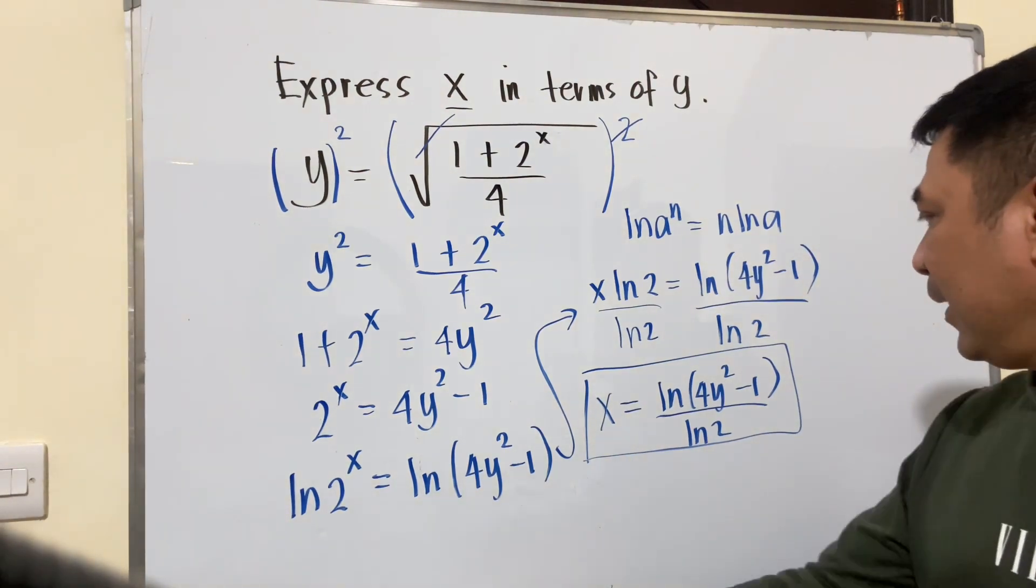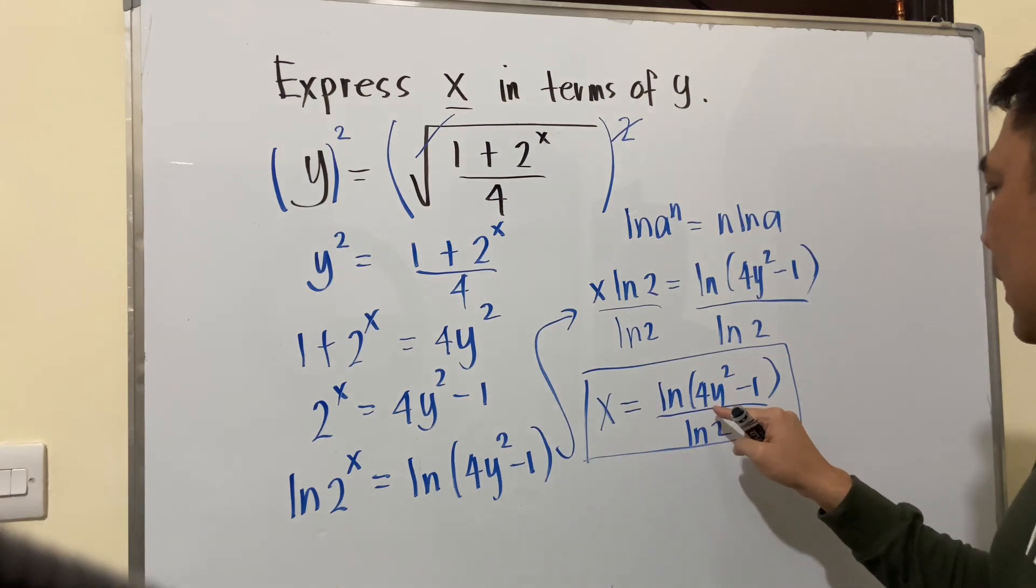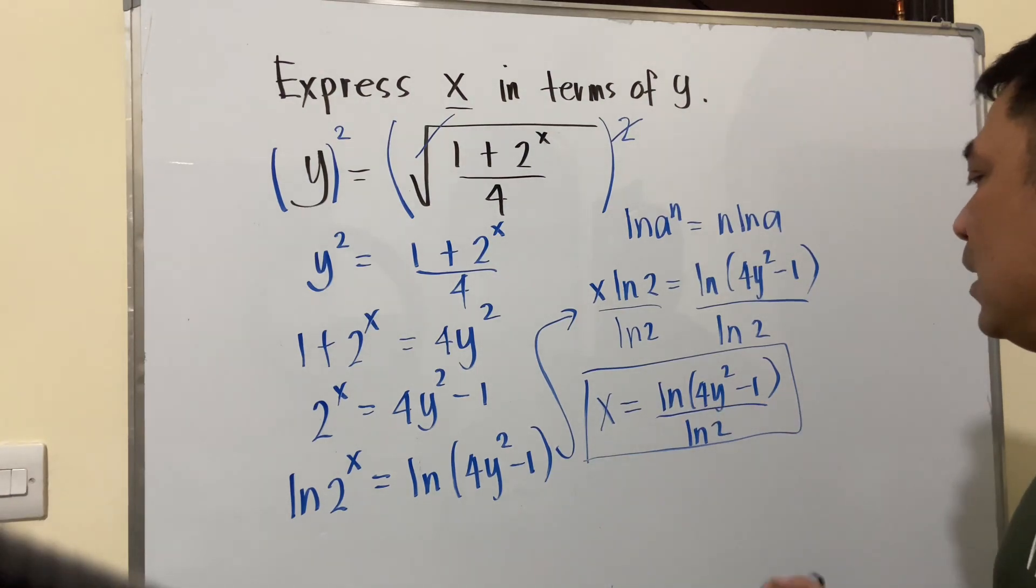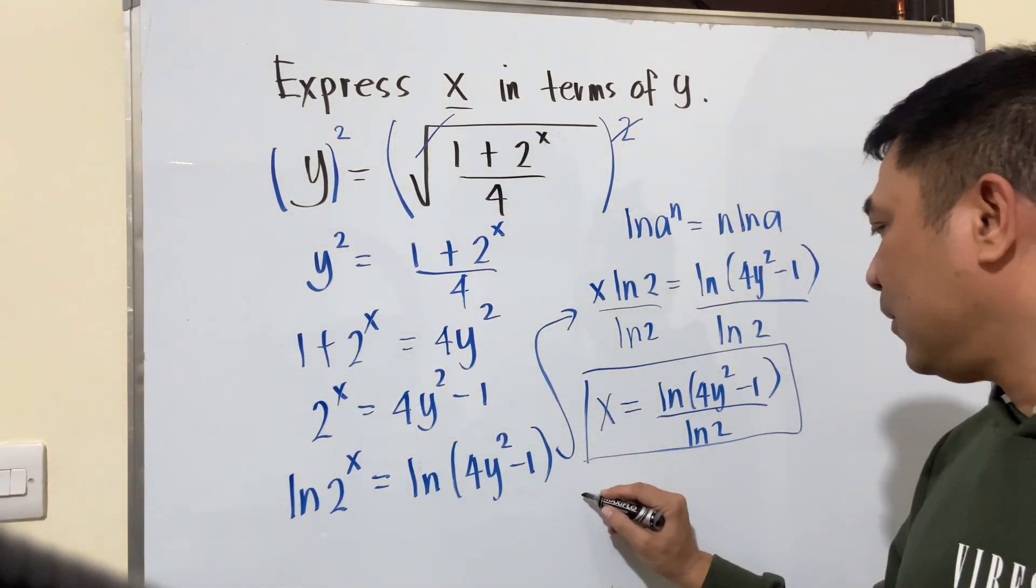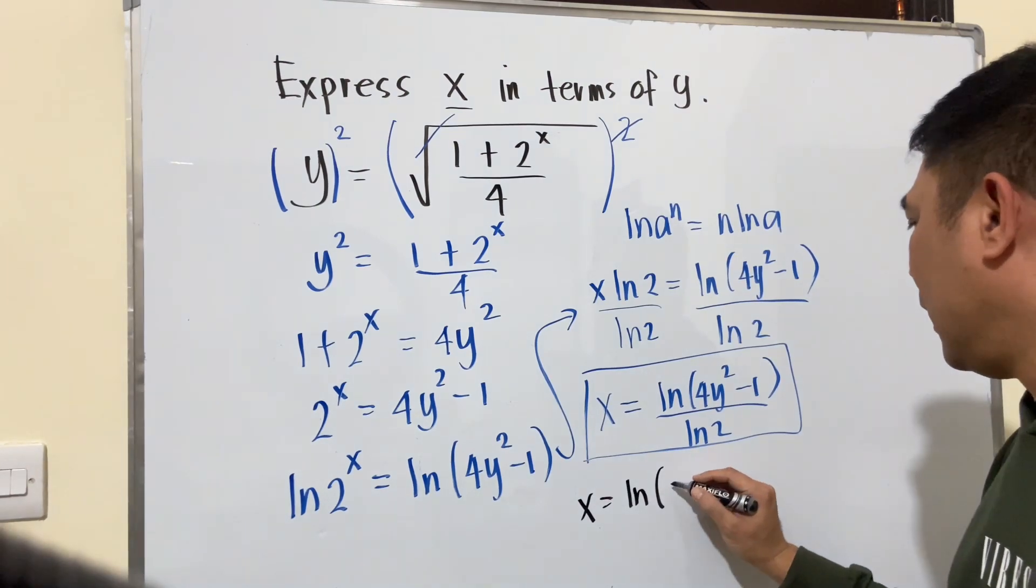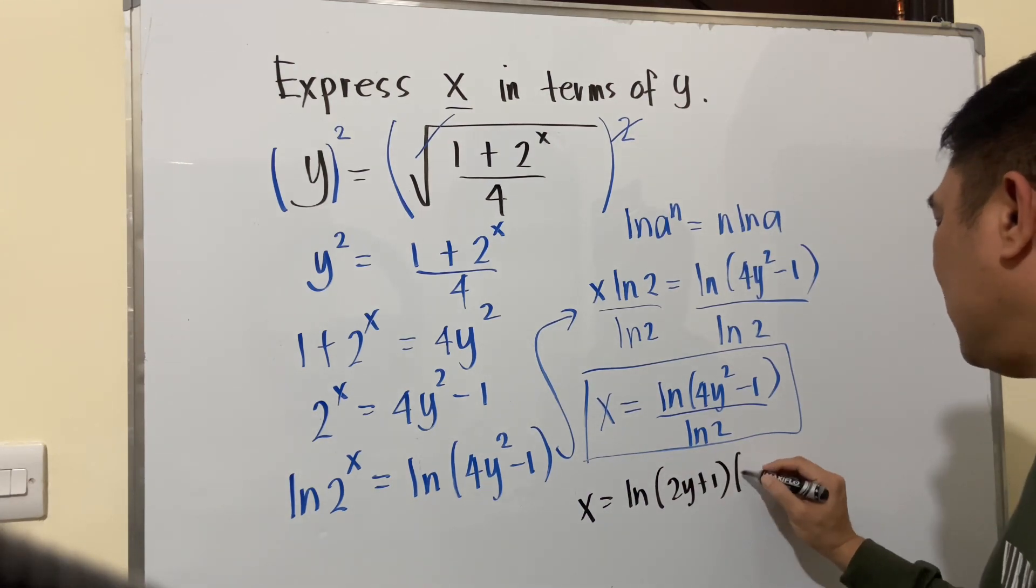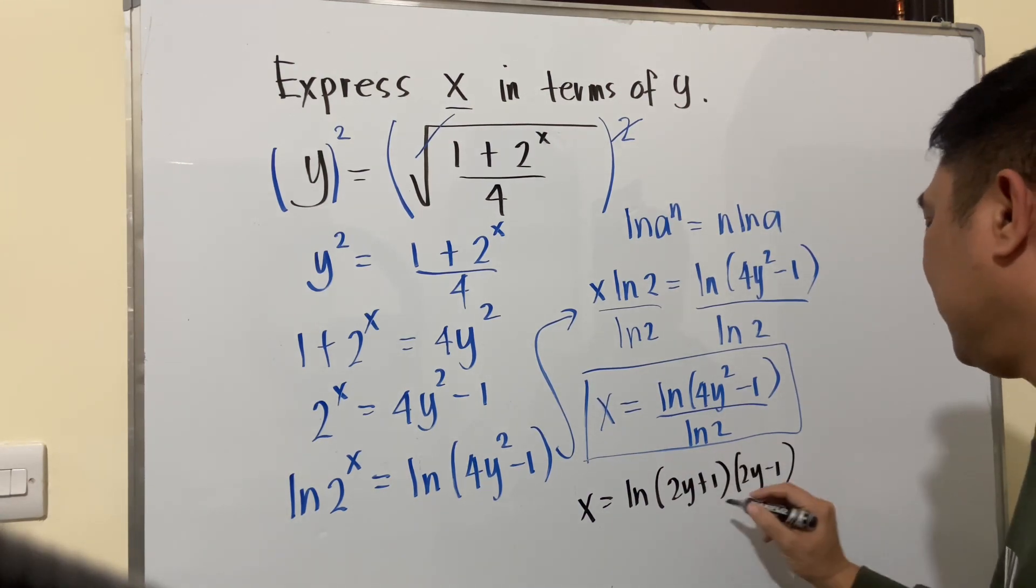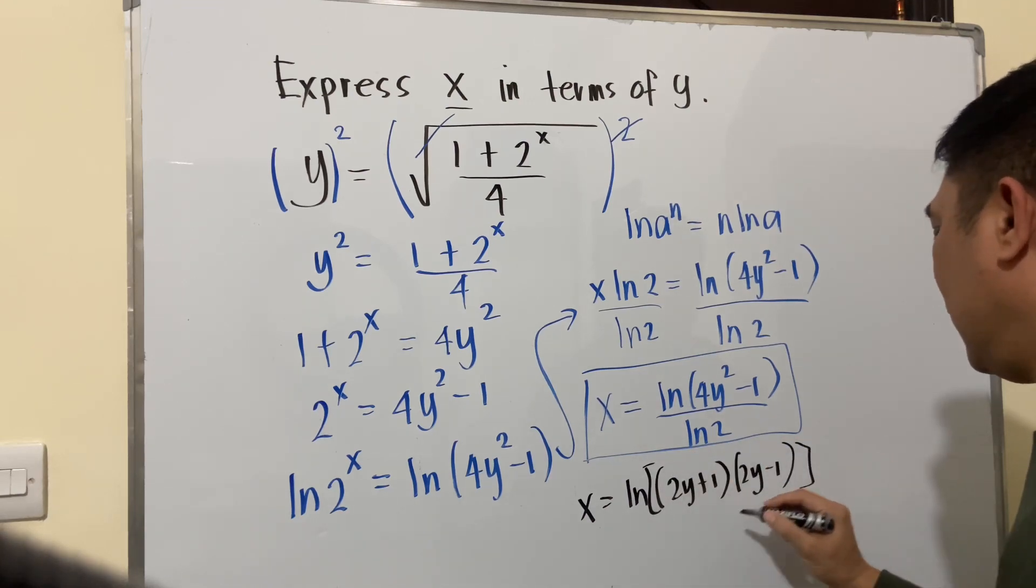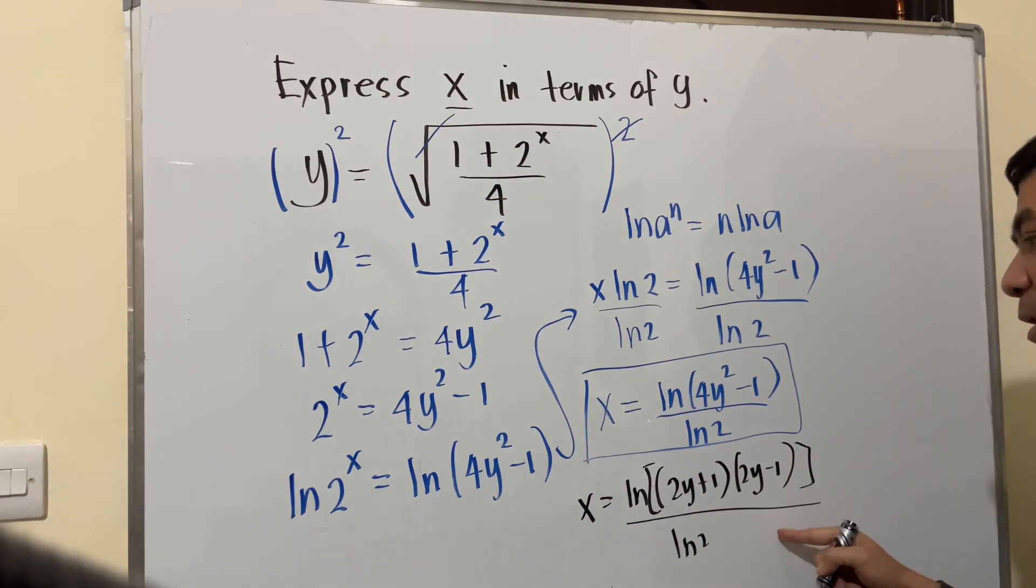In other cases, since this is the difference of 2 squares, you might find that you can have your final answer like ln of 2y plus 1 times 2y minus 1 over ln 2. This is possible, we can express our answer like this.